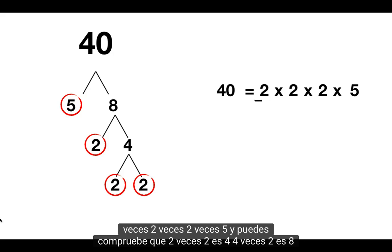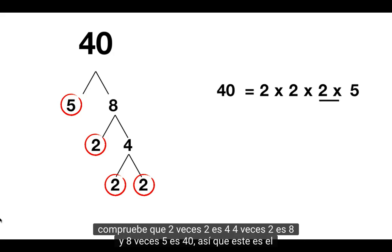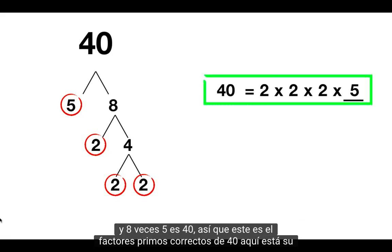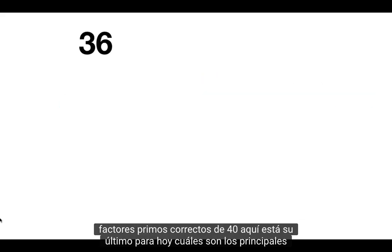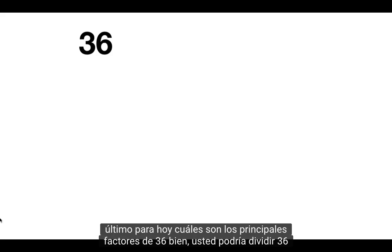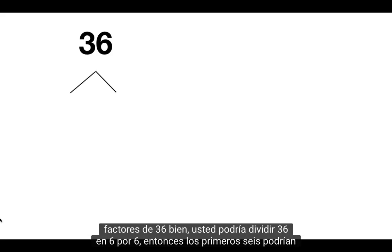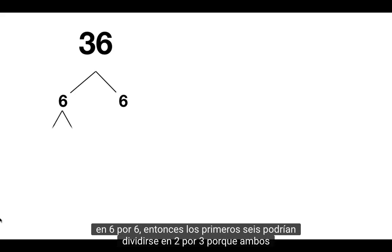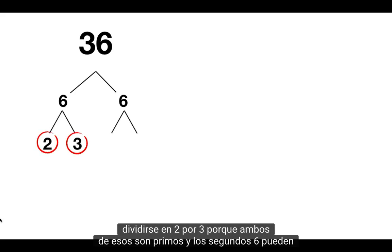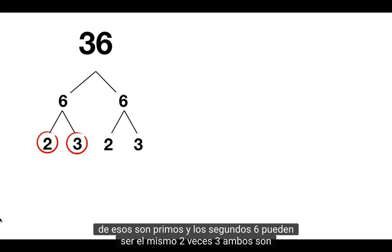So we write that 40 is equal to 2 times 2 times 2 times 5. And you can check that 2 times 2 is 4, 4 times 2 is 8, and 8 times 5 is 40. So this is the correct prime factors of 40. Here's your last one for today. What are the prime factors of 36? Well, you could split 36 into 6 times 6. Then the first 6 could be split up into 2 times 3, because both of those are prime. And the second 6 can be the same: 2 times 3.